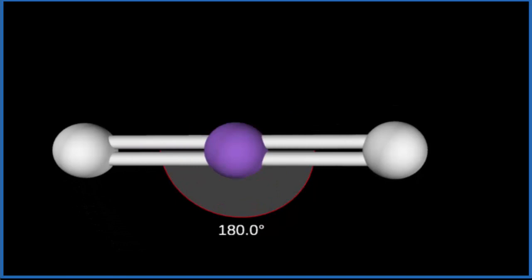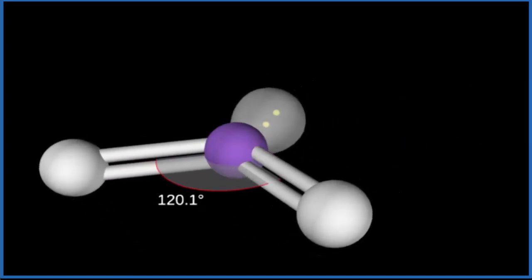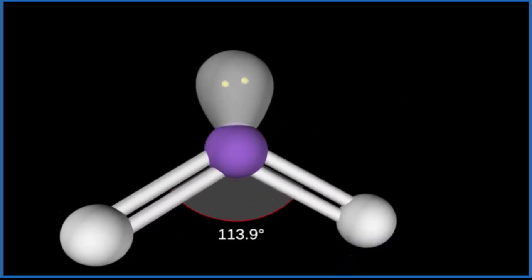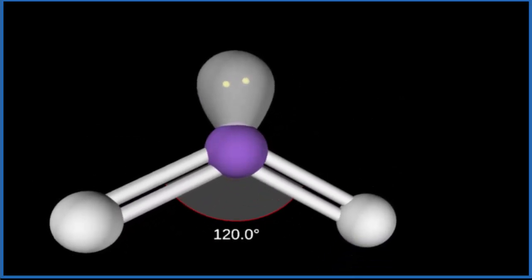And then we're going to add that lone pair. When we do that, it pushes those down, and we end up with that generic bond angle of 120 degrees. So this is considered a bent molecular geometry. It's bent because the lone pair occupies space and pushes these oxygen atoms down.